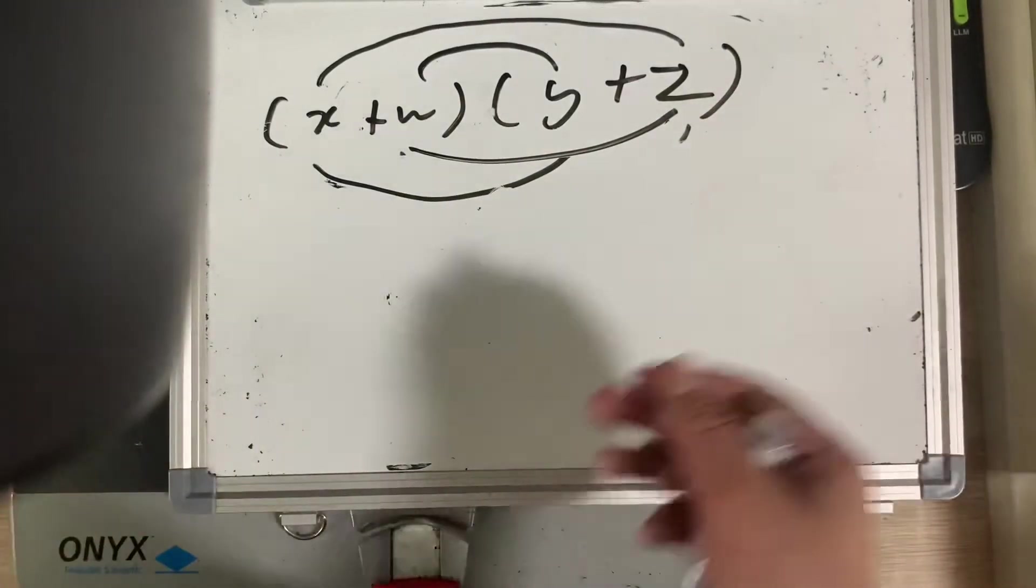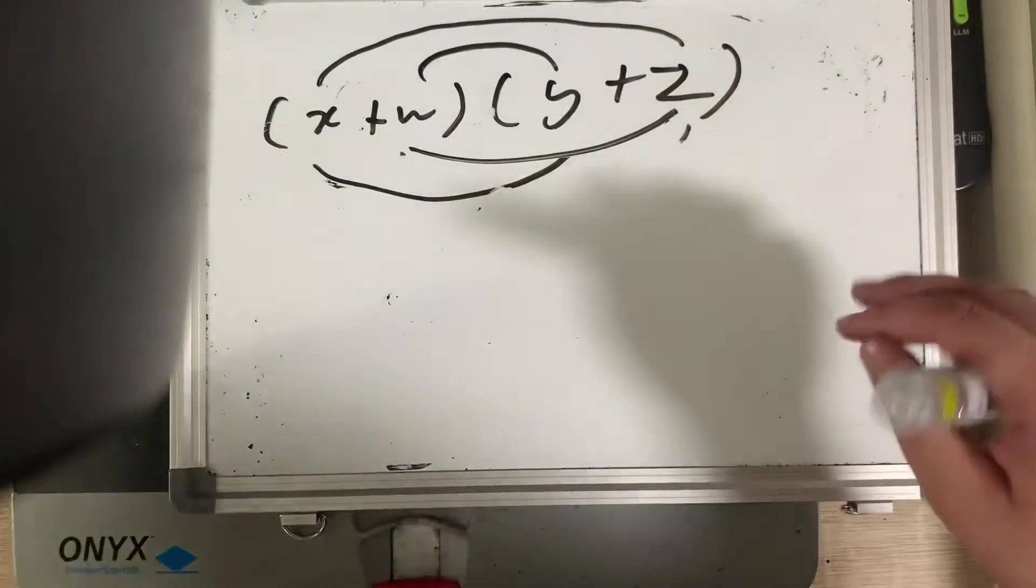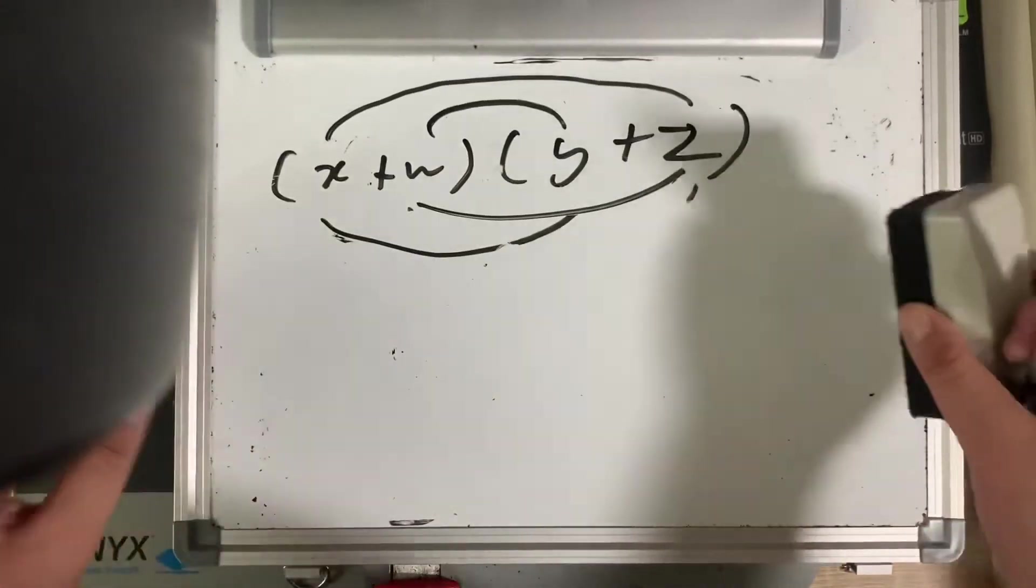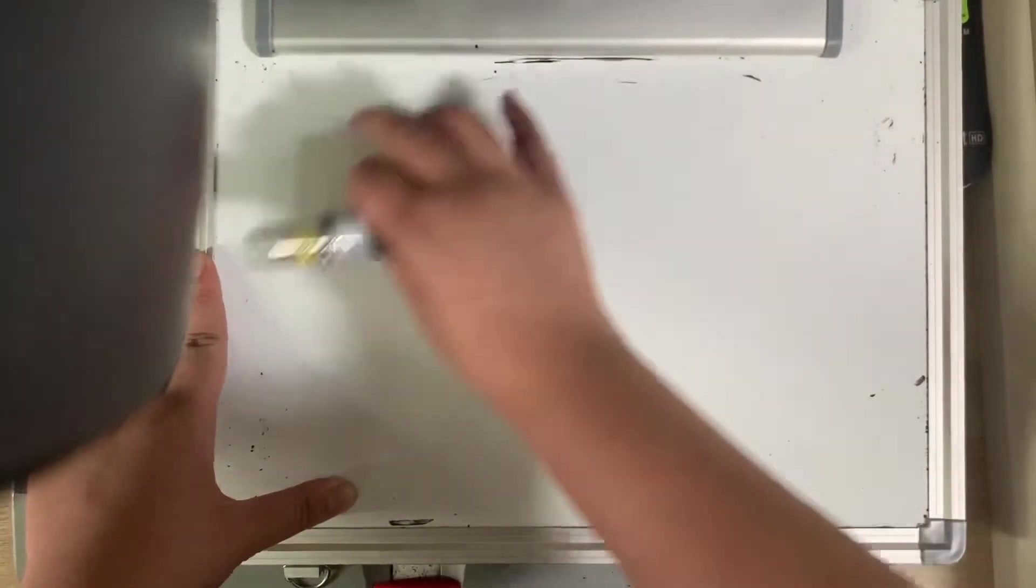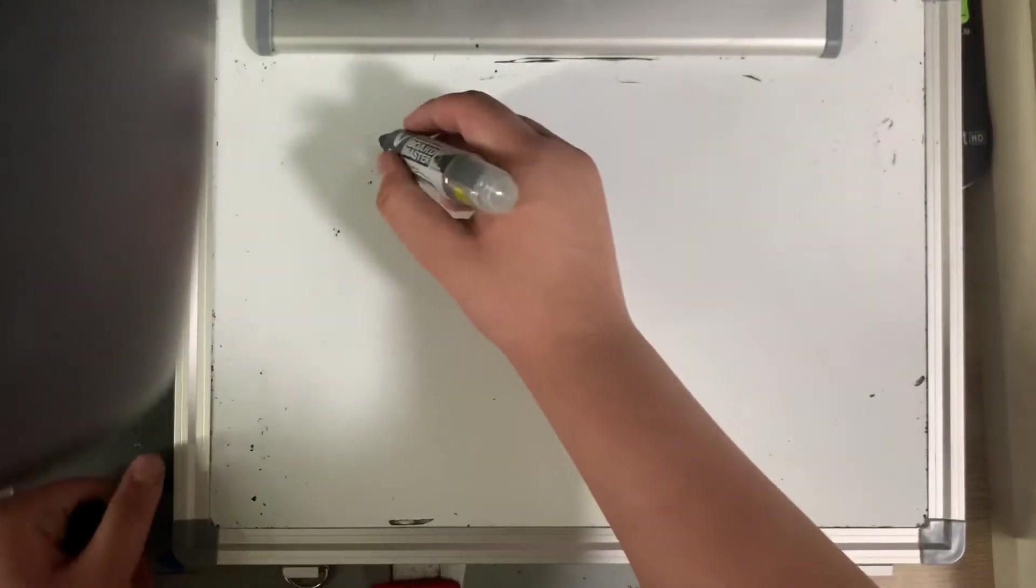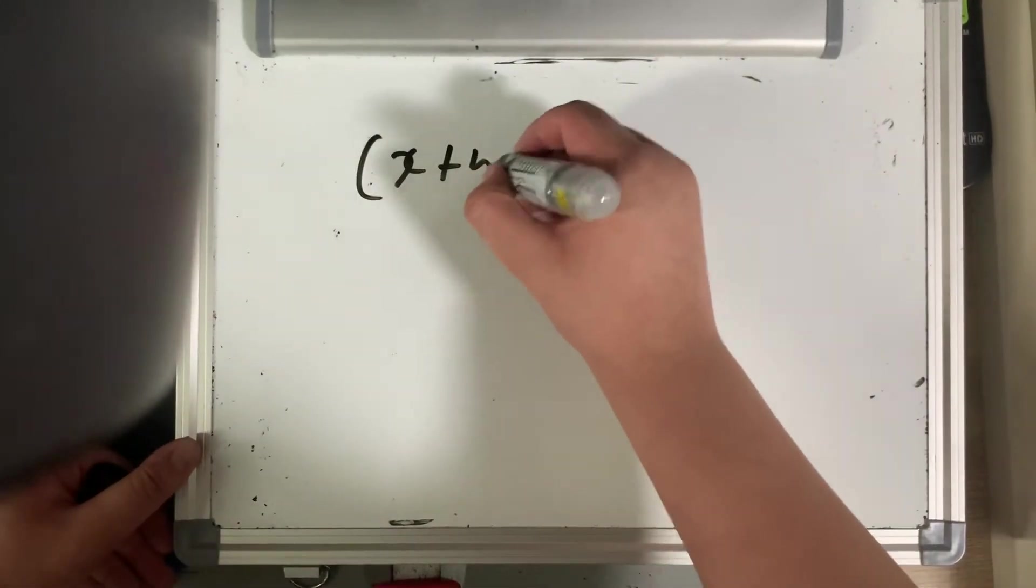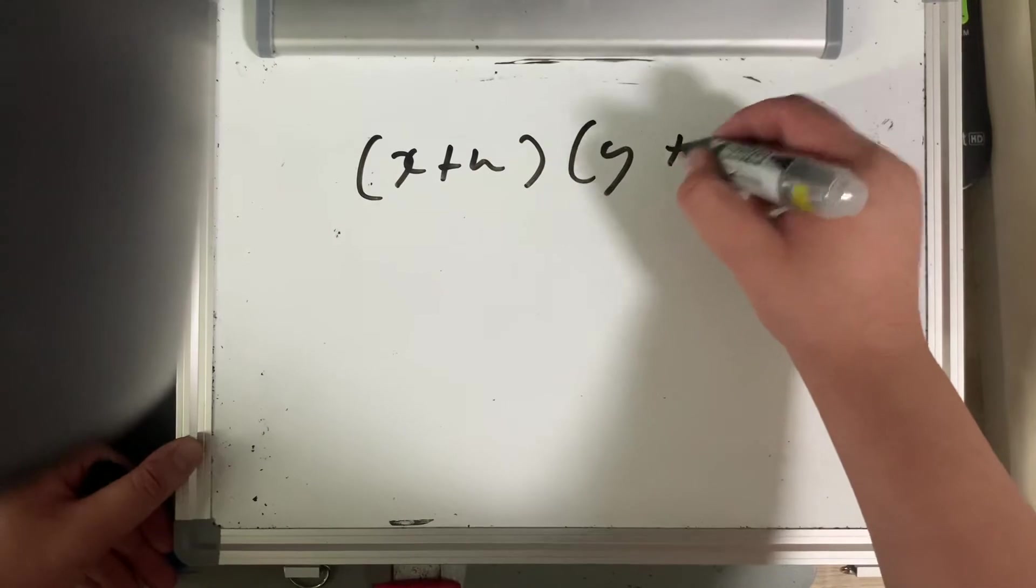Maybe you're not satisfied with this method. Maybe this method seems too complex and too complicated. How about I could prove it with maybe some, maybe I could prove it geometrically. If you remember the expression, it was x plus w times y plus z, right?